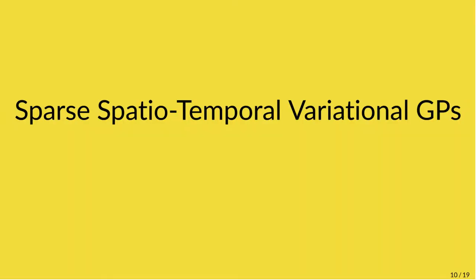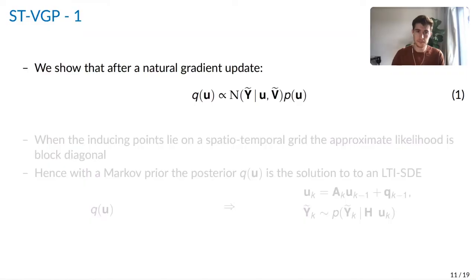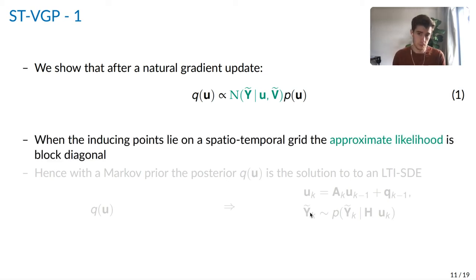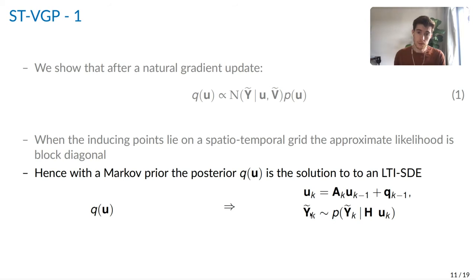I now turn to our proposed model that combines the state-space Gaussian processes along with variational sparse GPs to allow us to use substantially more inducing points for a much lower computational complexity. We do this by first showing that after a natural gradient update, the approximate posterior, so that's q of u, is equivalent to applying Bayes' rule from the model prior, so p of u in this case, with an appropriate approximate likelihood. We show that when the inducing points lie on a spatiotemporal grid, the approximate likelihood is actually block diagonal. And thus, when p of u is Markov or has a Markov kernel, the posterior q of u is actually the solution to a linear time invariant SDE.